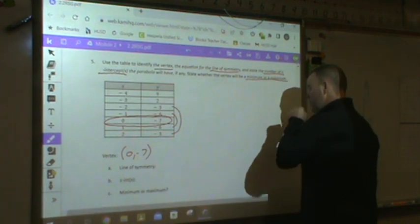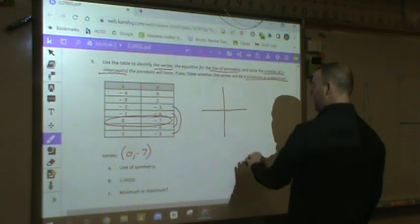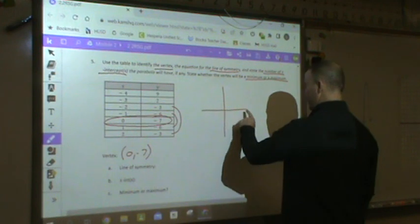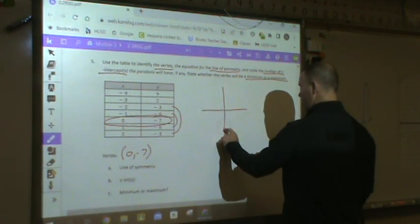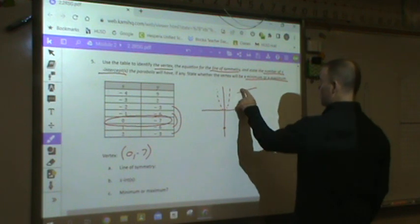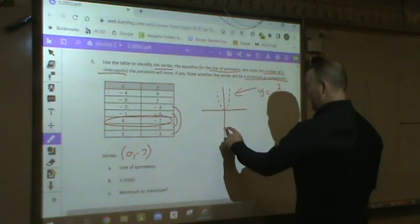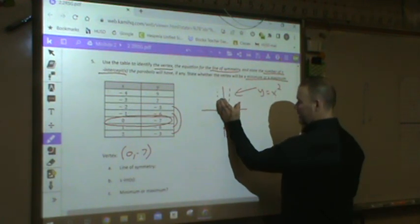My line of symmetry. Well, you can either envision this, or if you cannot envision this, draw a mini graph over here and plot your vertex. 0, negative 7. From my original y equals x squared, from y equals x squared, where has my new parabola moved? My new parabola has done this.